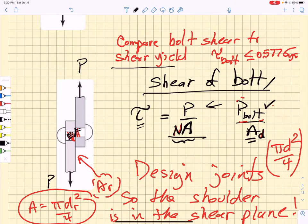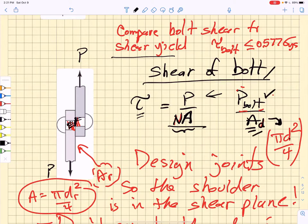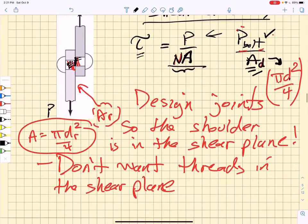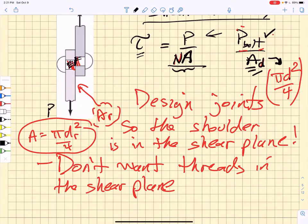Now, we're going to use nominal diameter because you don't want to have the threads in the section where you're going to have shear. This nominal area is just pi d squared over 4, and so it's easy to calculate what the shear stress is on the bolts. And you want to avoid the threads because you wouldn't be using AD if you were loading through the threads.